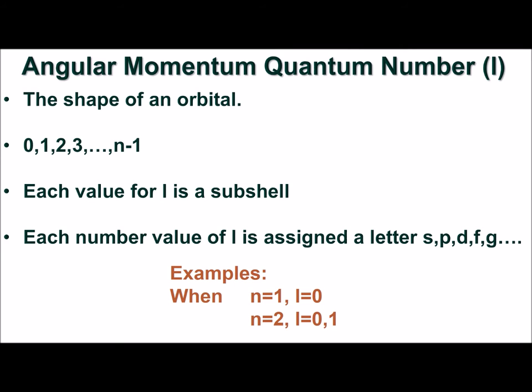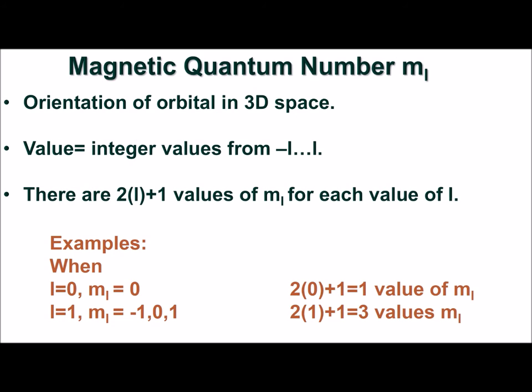The magnetic quantum number, m sub L, indicates the orientation of the orbital in space. There are 2 times L plus 1 values for each value of L, and each value can be any integer from negative L to positive L.